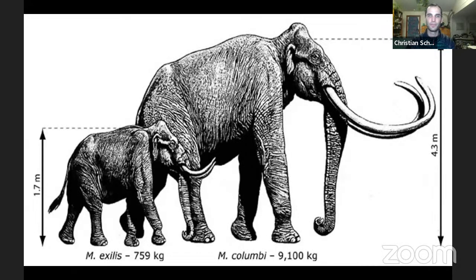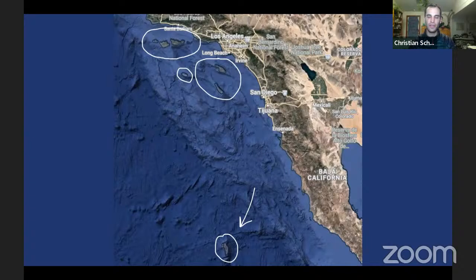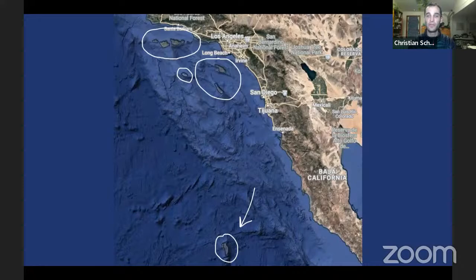One more island worth mentioning is Guadalupe Island off the coast of Baja California. It is actually quite a bit more remote than any of the California Archipelago islands — further offshore and further south, with no intermediate stepping-stone islands to connect it to the main landmass.